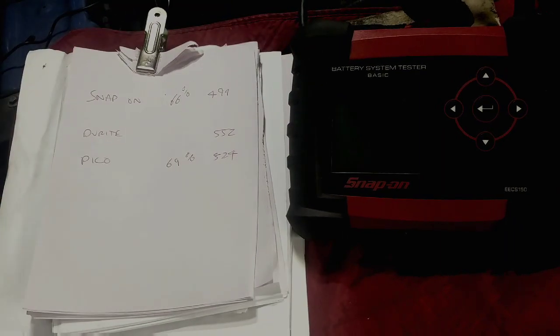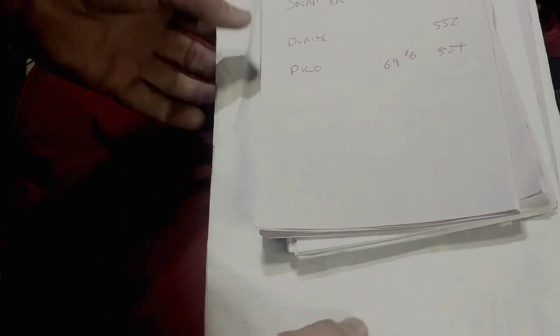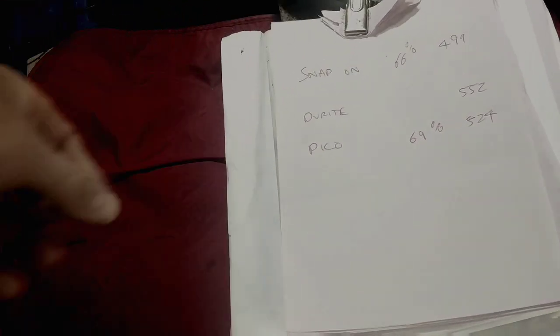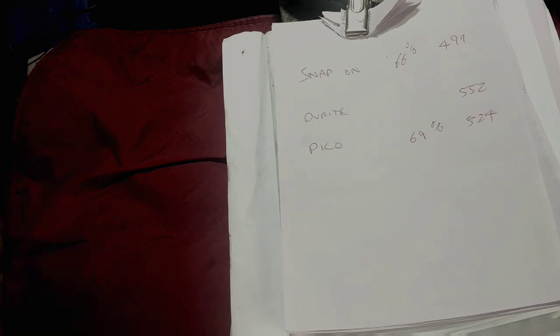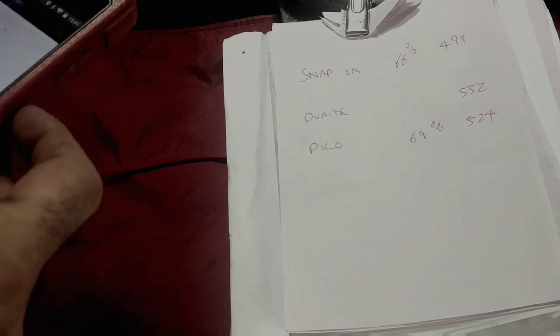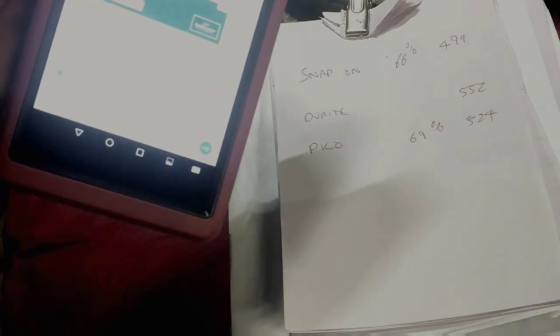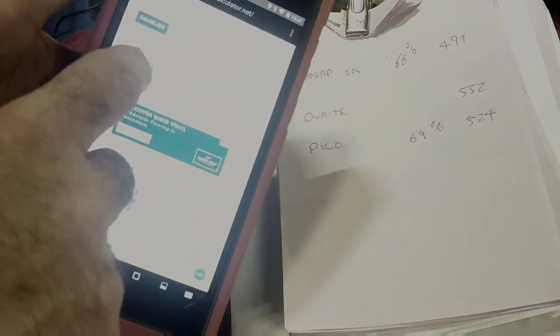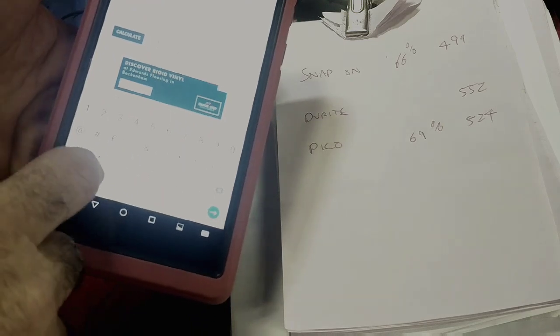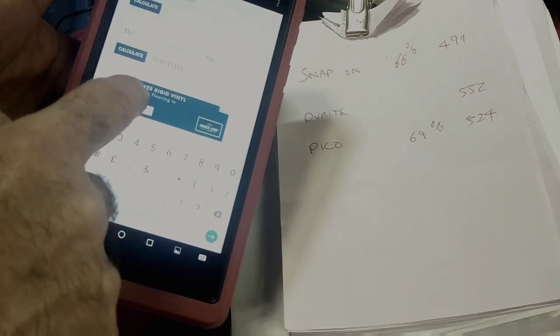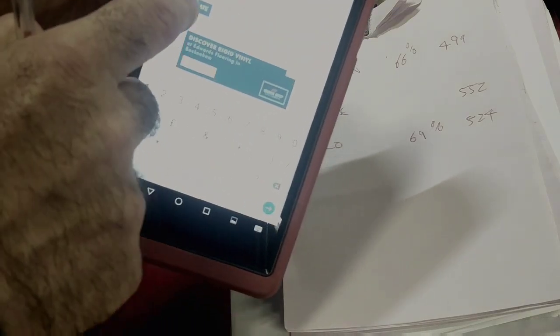I've just been making a note of the three different results. I've just got to convert because the little Durite doesn't give you the percentage. So I've got a little online calculator here, just going to put in 552 of 750, calculate 73%.